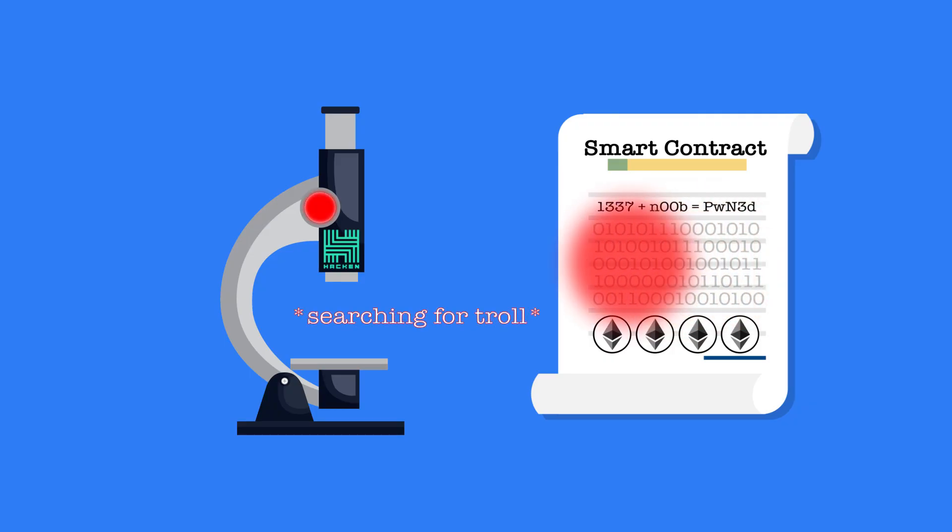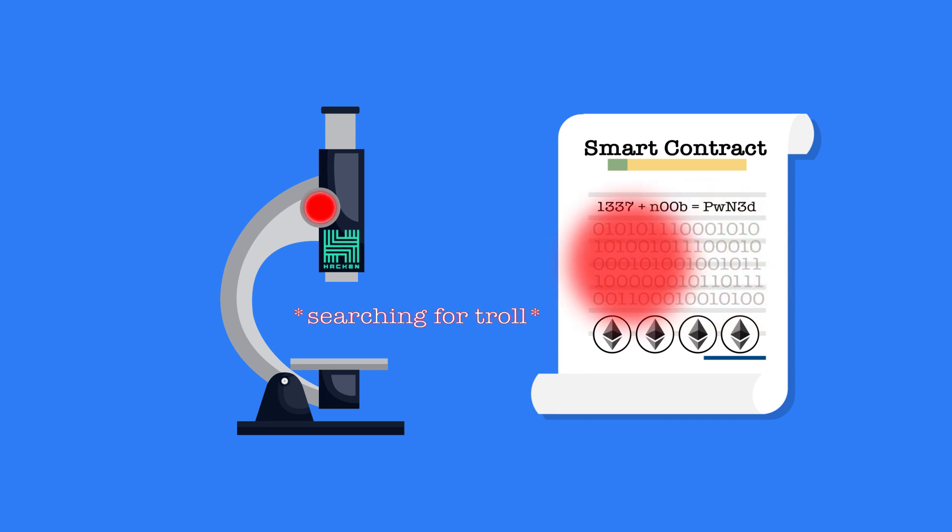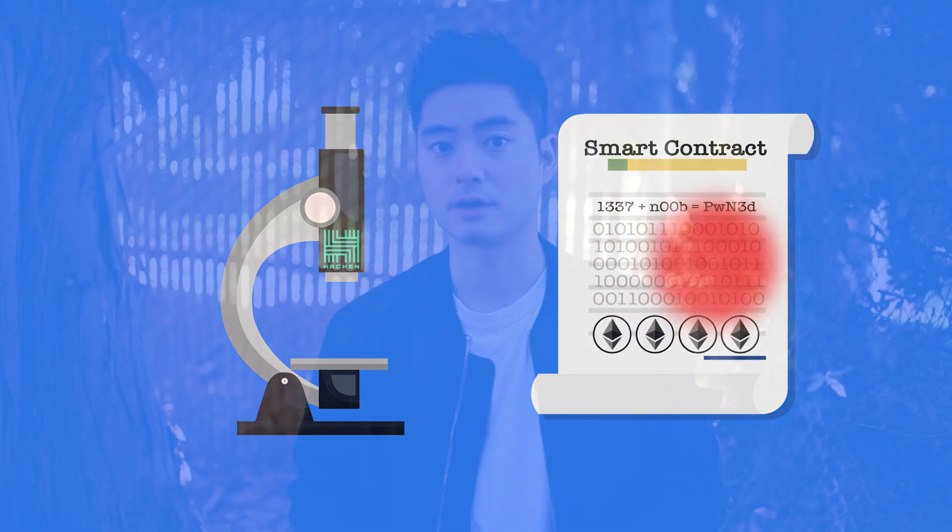Think of a science project. The auditors create a controlled environment by freezing the code. They test it over and over with manual methods and then automated methods. Auditors look specifically for false positives and unexpected behaviors in the code. The vulnerabilities are written into a lab report and presented to the company, where developers can resolve the issues.